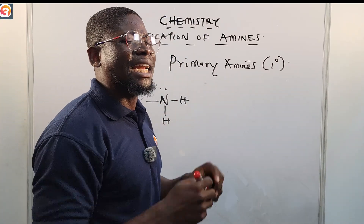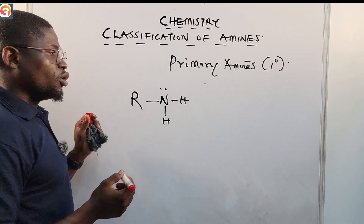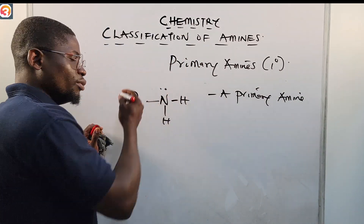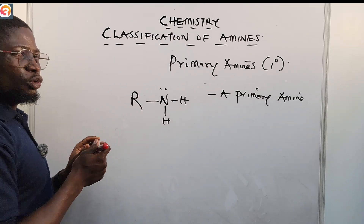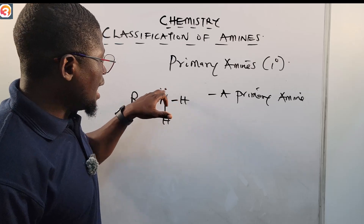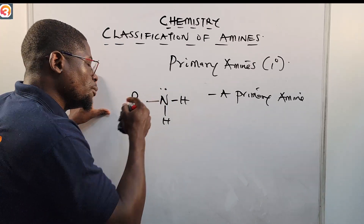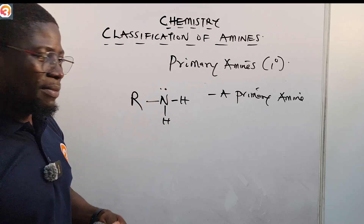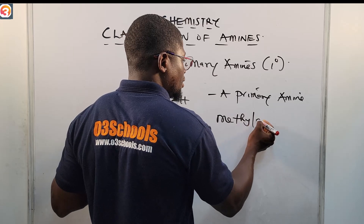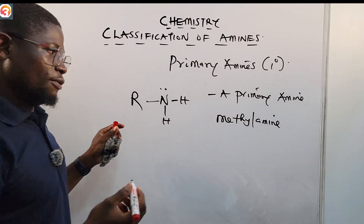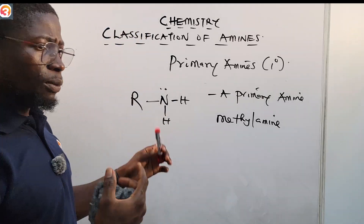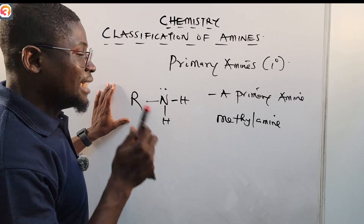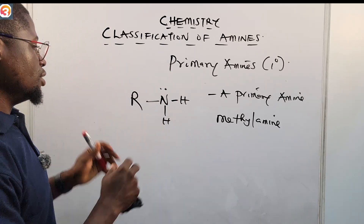So if one of the hydrogen atoms in ammonia is replaced by an R group — for example an alkyl group — we call that a primary amine. A simple example of a primary amine is methylamine. We'll cover naming amines in the next episode. Just know that a primary amine is one where one hydrogen atom in ammonia has been replaced by an R group, either an alkyl group or an aromatic ring.